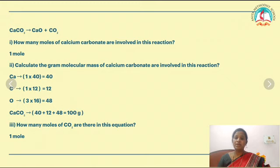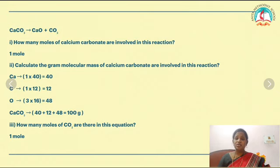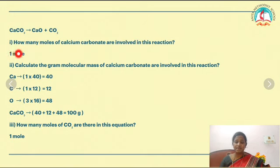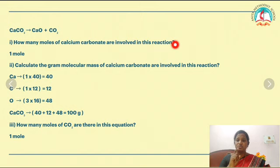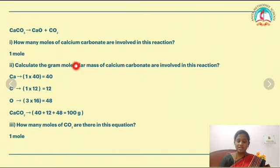This is your textbook question. CaCO₃ (calcium carbonate) decomposes into calcium oxide and carbon dioxide. The first question is: how many moles of calcium carbonate are involved in this reaction? If there is no number, it means it has only 1, so we have 1 mole of calcium carbonate. Now calculate the gram molecular mass: CaCO₃ has calcium, carbon, and oxygen atoms.